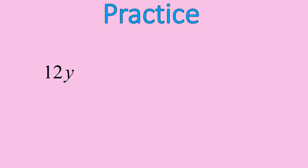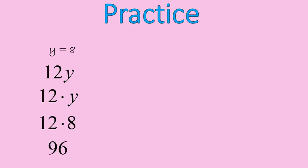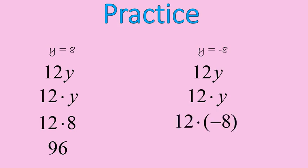Another practice question: with variable expression 12y, solve when y equals 8. 12y means 12 times y, so that means 12 times 8, which is 96. Let's do it again when y equals negative 8 — throwing in a negative number. Same steps as before, only now we're multiplying times negative 8. A positive times a negative gives us a negative answer, so our final answer is negative 96.